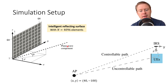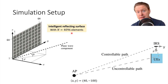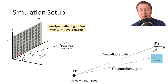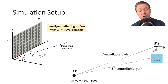It was only stated that there were 4096 different elements in the IRS, but the shape wasn't declared in the challenge. The truth is that it was a 64 by 64 square array — a uniform planar array. The distance between every element was 0.4 wavelengths, and 4 gigahertz was the wavelength the entire communication system was built on.